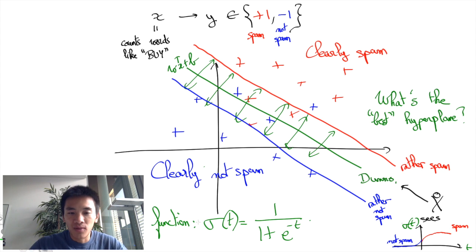One way to interpret the logistic regression is to consider that the height of the surface is the probability that the feature is a spam or has label plus one.